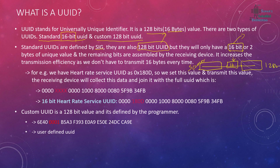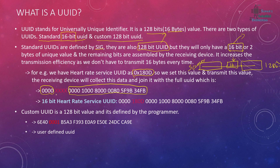For example, the heart rate service UUID is 0x180D. When we transmit this value, the receiving device collects and joins the data to make a full UUID. The standard UUIDs all share the same base UUID — only the 16-bit service UUID portion changes. So for heart rate it's 180D, and the remaining base part is already known to the scanner.